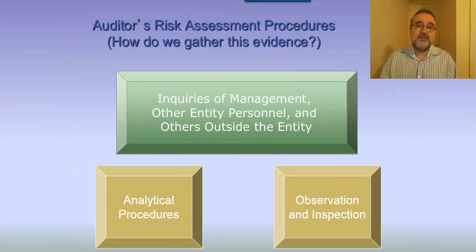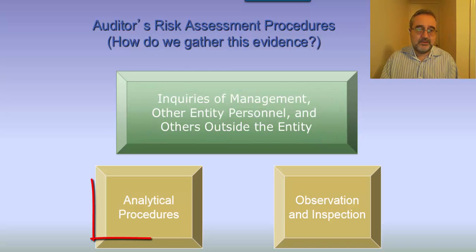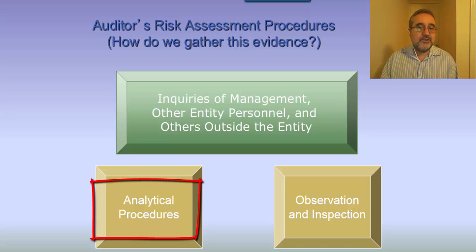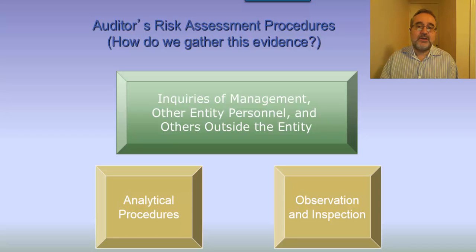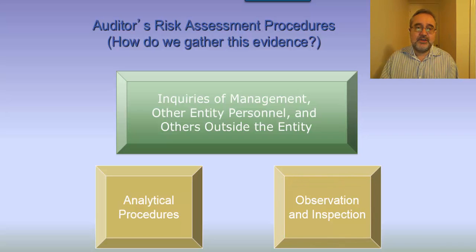From a risk assessment perspective, how do we gather evidence about the risk of material misstatement? We make inquiries of management, other entity personnel, and others outside the entity. We conduct analytical procedures — mathematical ratio analyses on the financial statements to determine where numbers have changed and where there might be risks compared to prior periods. We also perform observation and inspection. Inquiries, observation and inspection, and analytical procedures form the basis of our risk assessment evidence-gathering.